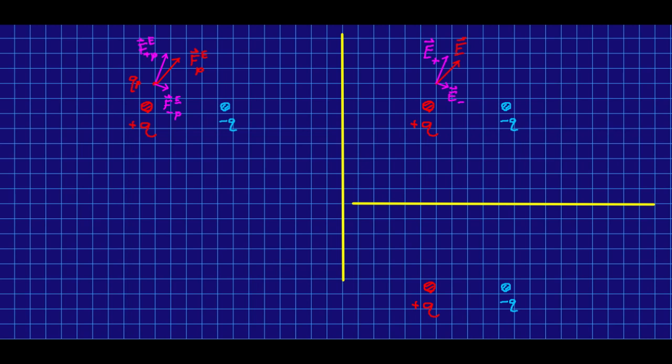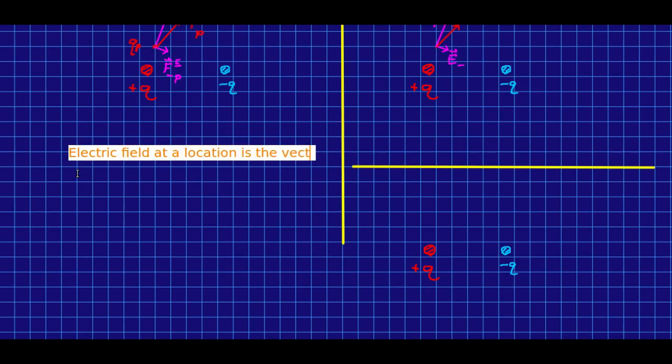So that is a general rule that will always be true, that the electric field at a location is the vector sum of the fields due to all source charges.